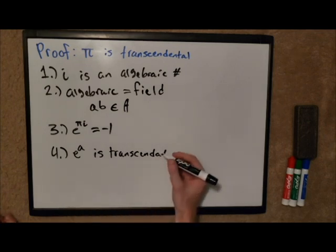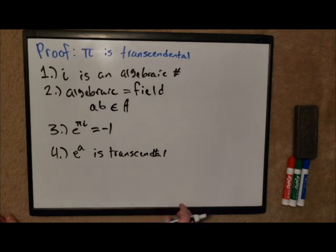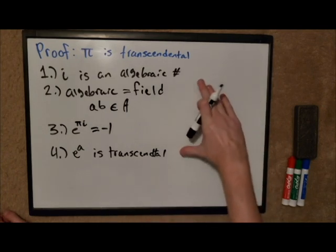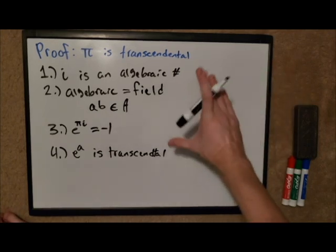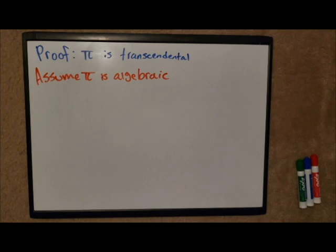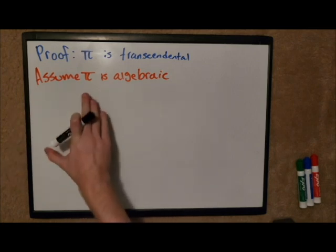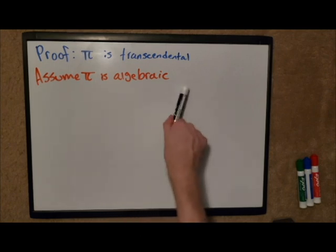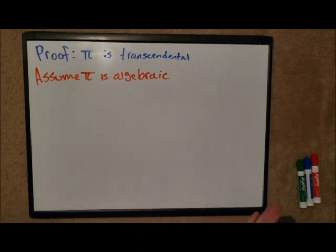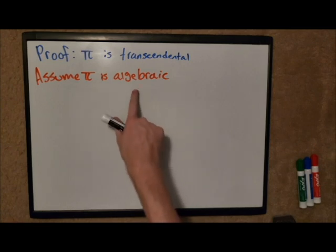So now that we know all of this we can finally do our actual proof, which is very short. This proof is what we mathematicians call a proof by contradiction. Basically we're going to start out with this statement, we're going to assume something, some property about pi. In this case we're going to assume pi is algebraic.